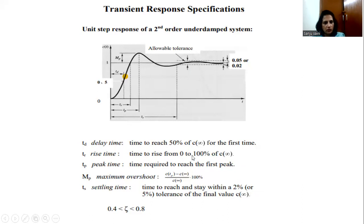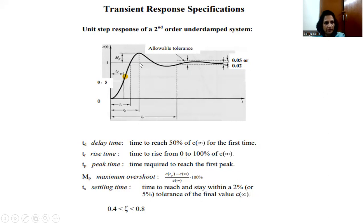The rise time is the time taken by the system to rise from 0 to 100% of its final value; the time taken for this is termed the rise time. Peak time is the time taken by the system response to reach the first peak. Starting from the initial response, it reaches the first peak, and the time taken to reach this value is termed the peak time — the time taken by the system response to reach its first maximum value.